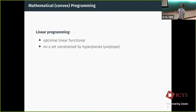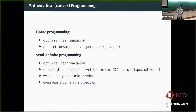One tool to find sum of squares decompositions in practice is mathematical programming — a general term for convex optimization routines. One well-known example is linear programming: optimizing a linear functional over a set constrained by hyperplanes, called a polytope. A more powerful variant is semi-definite programming, where we optimize a linear functional over a polytope intersected with the cone of PSD matrices — meaning some of the unknowns form a matrix that I want to be positive semi-definite.